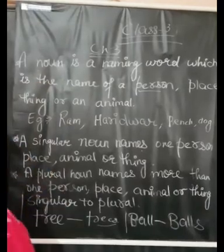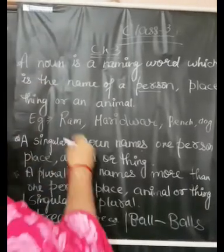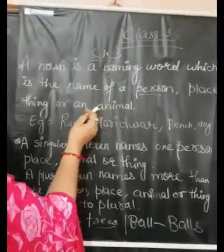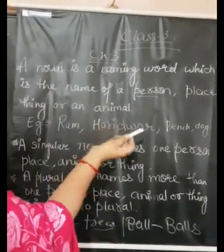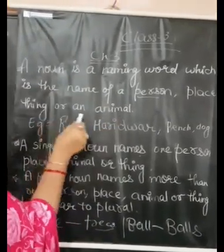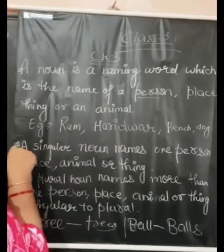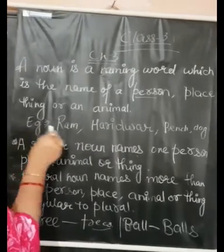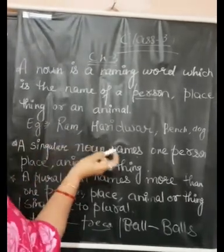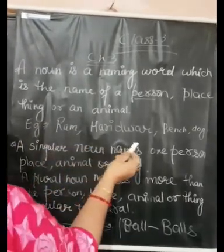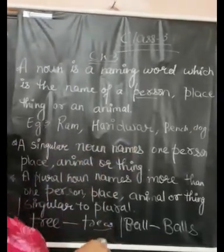A noun is a naming word which is the name of a person, place, thing, or an animal. Examples include Haridwar and Benchlock.